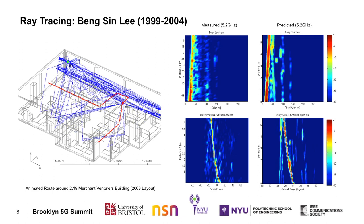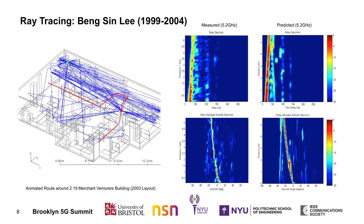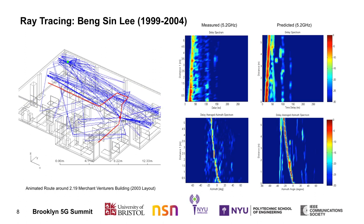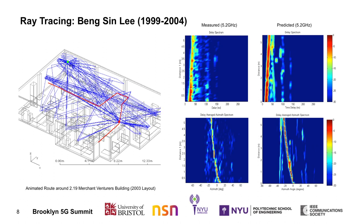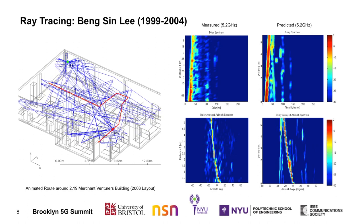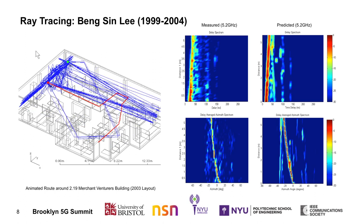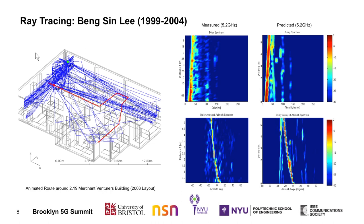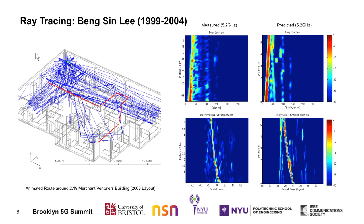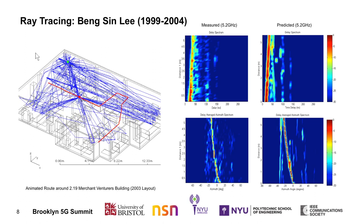What was interesting back then was to see whether the spatial and temporal data actually aligned with what was seen in practice. Using some of Mark's measurement equipment, we were able to measure the power delay profile and the power azimuth spectrum as a user moved along a particular route, producing the measured pictures shown in this slide. You can then see next to them the predicted power delay profiles and power azimuth spectrum. The model is replicating the detailed multipath structure — not just the strong direct paths, but also the weaker scattered components, which play an important part in the overall channel process.